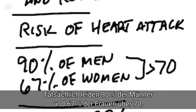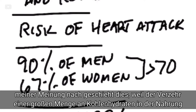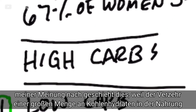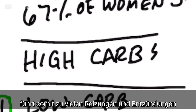In fact, 90% of men and 67% of women over the age of 70 have some amount of calcium in their arteries. My opinion of why this is: consuming high amounts of carbohydrate in your diet is like taking steel wool and sanding the inside of your arteries — it creates a lot of irritation and a lot of inflammation.